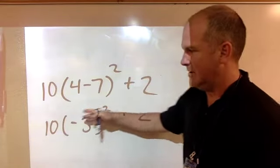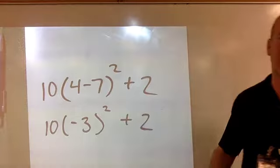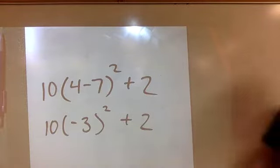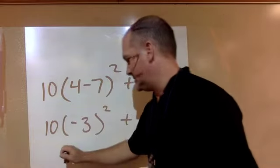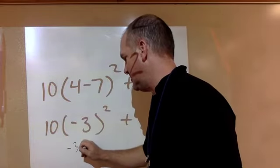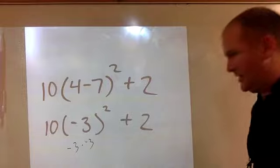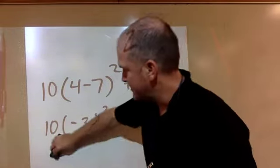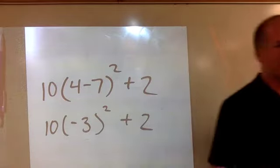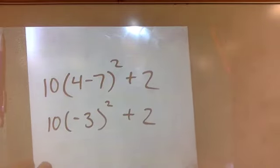So negative 3 squared - anything squared you're just multiplying it by itself. Negative 3 squared means negative 3 times negative 3, and hopefully you remember that a negative times a negative is a positive. So negative 3 squared is actually positive 9, not negative 9.